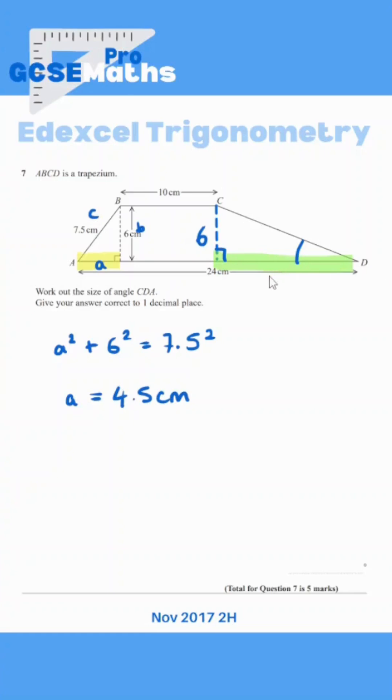So to find the green bit, I can just subtract 24, 10 and 4.5. So that leaves me with 9.5.